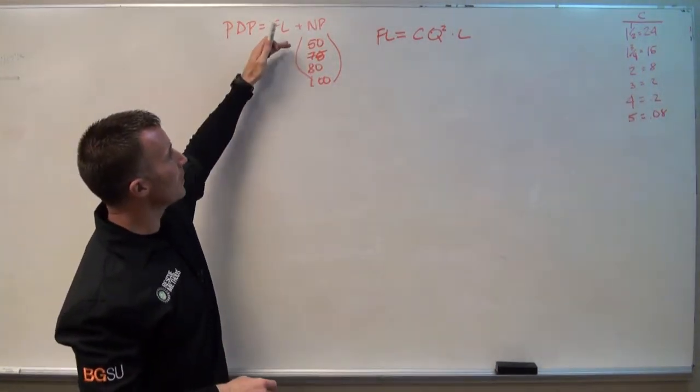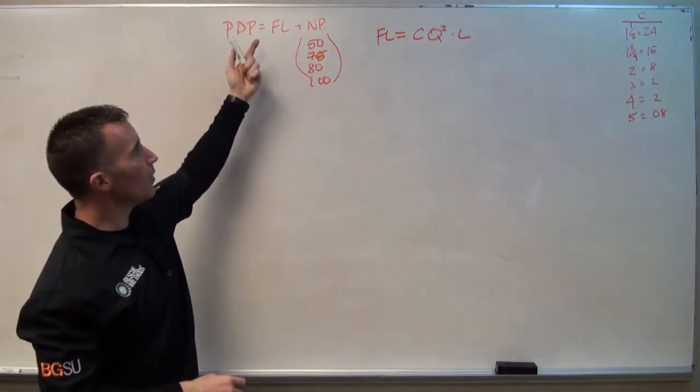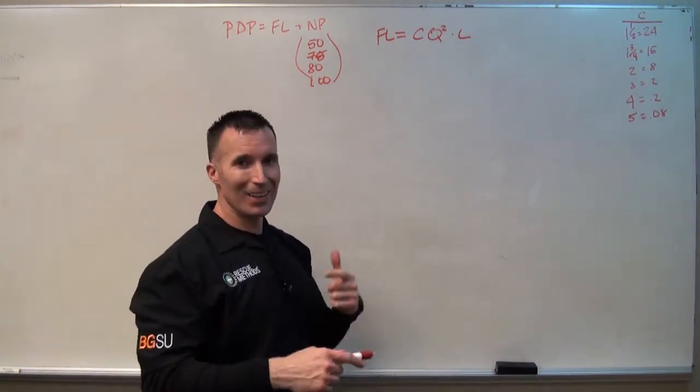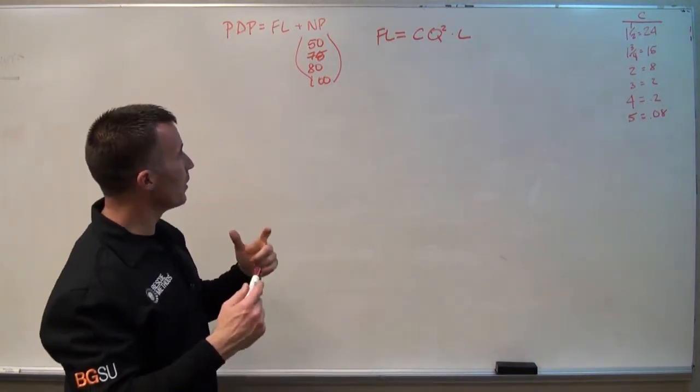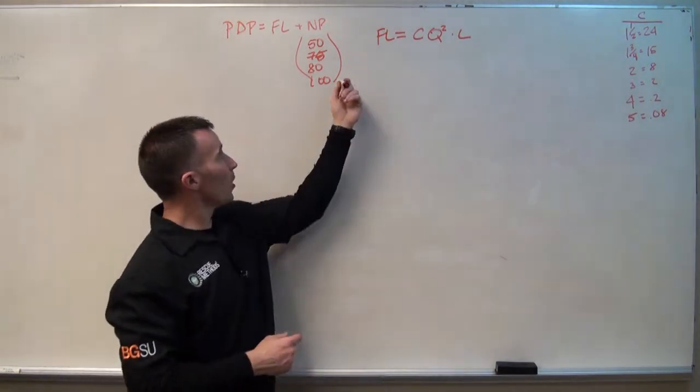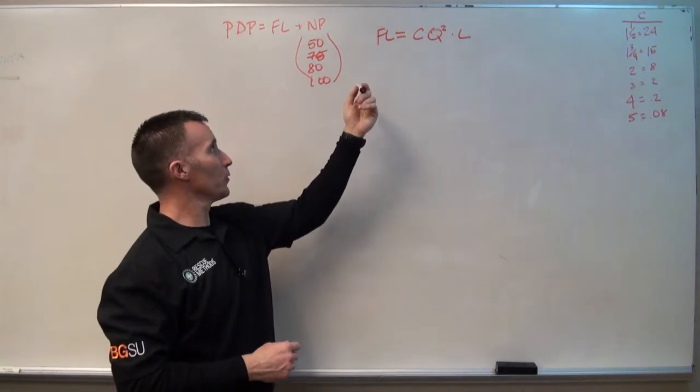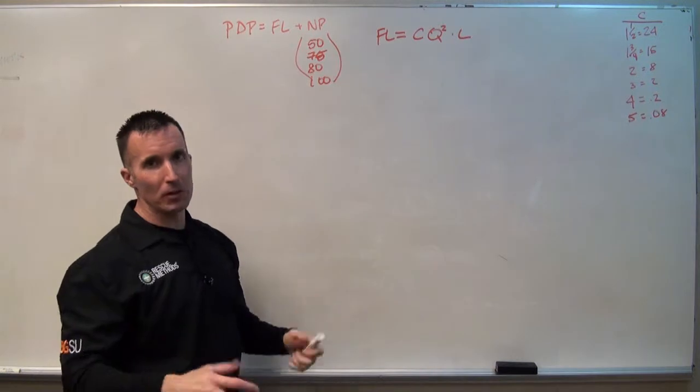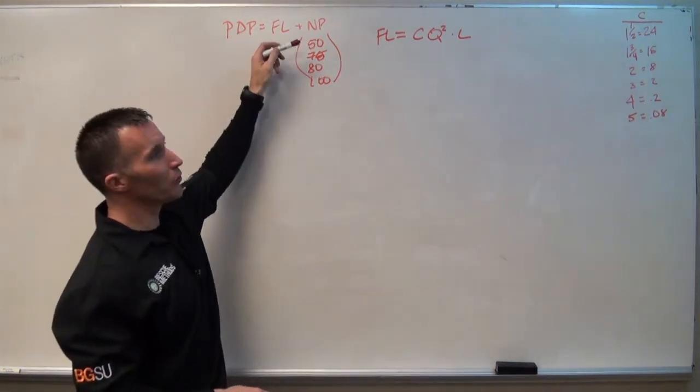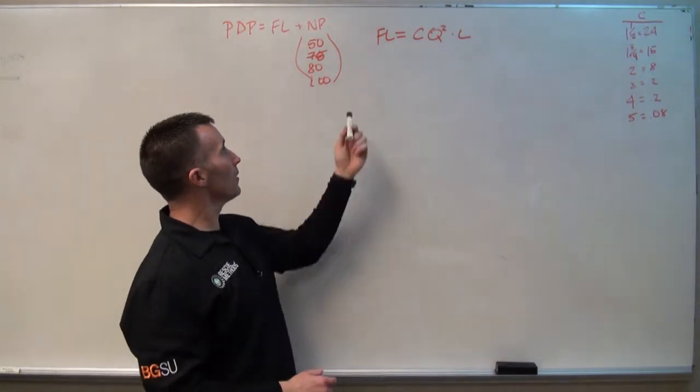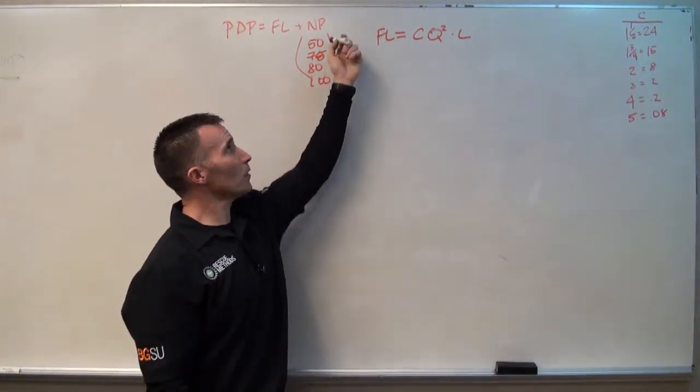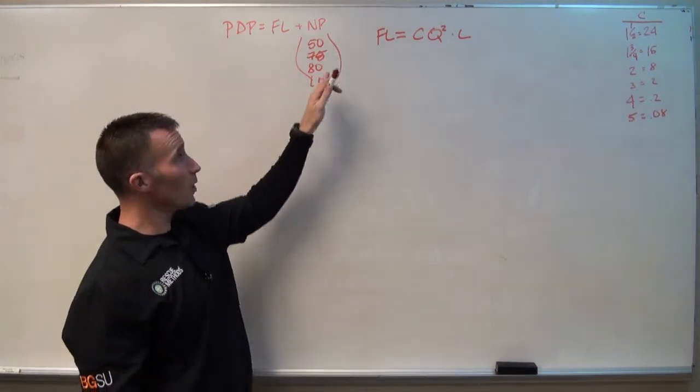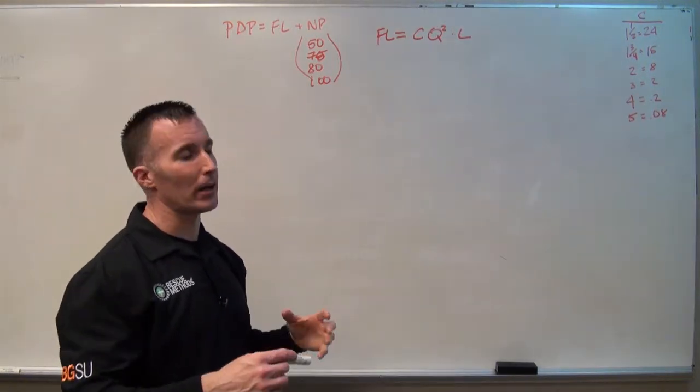The reason I say it's either 50, 75, 80, or 100 is that we know smoothbores operate at either 50 or 80. When we start talking about combination nozzles and getting into the various types, we're really looking at one of two numbers. Most of the time, our pressure on combination nozzles is either 100 or 75. In some cases, manufacturers have low pressure versions that operate at 50. It's a good idea to understand these are the four most common numbers, though not the only numbers you'll ever utilize in the nozzle pressure component of that equation.